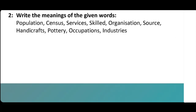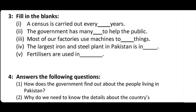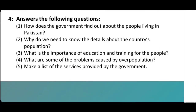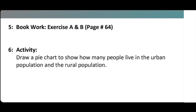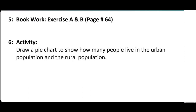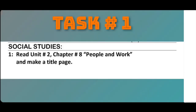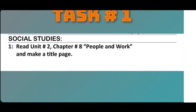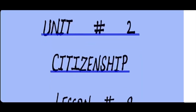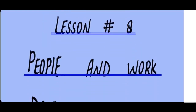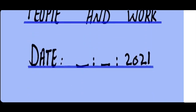Task Number 2: Write the meaning of the following words. Task Number 3: Fill in the blanks. Task Number 4: Answer the following questions. Task Number 5: Book work. Task Number 6: Activity. For Task 1, read Unit Number 2, Lesson Number 8, People and Work and make a title page with Unit Number 2, Citizenship, Lesson Number 8, People and Work, and date mentioned.